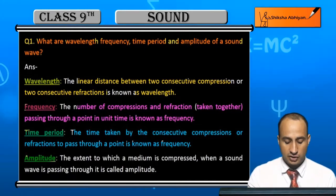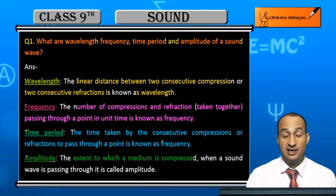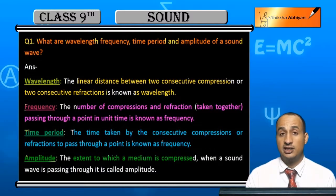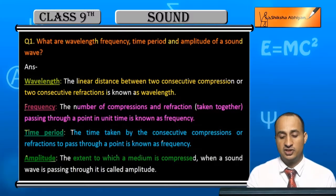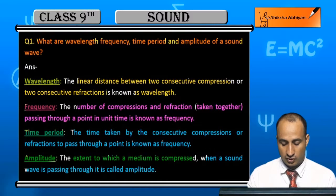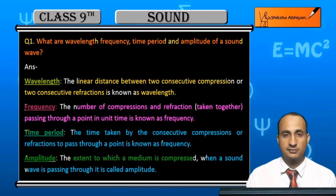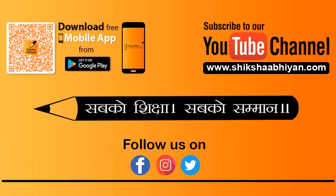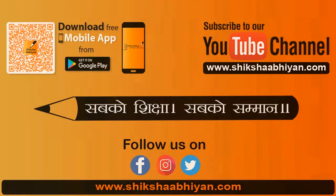If we talk about amplitude — the extent to which a medium is compressed, or how much it is compressed. In wave motion, it is represented by the maximum height. When a sound wave is passing through, it is called amplitude, which represents the maximum compression in the wave.